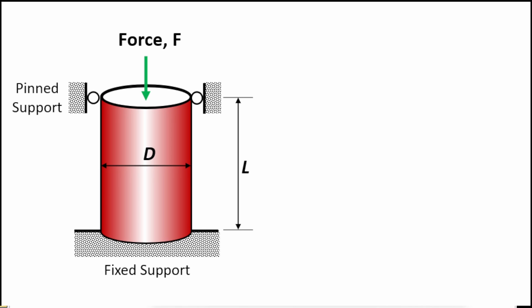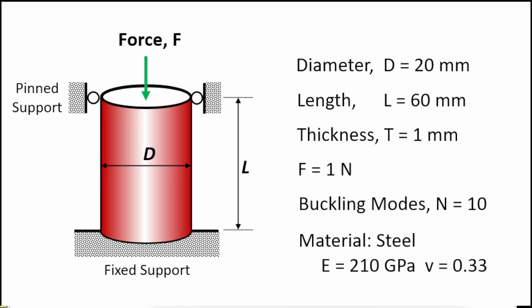This is a thin-wall cylindrical structure with a given diameter and defined height. It's fixed securely at the base and with a pin support at the top — a classic representation of a profile that will undergo buckling deformation. The diameter is 20 millimeters, the length is 60 millimeters, with a wall thickness of one millimeter and just a one-newton force at the top to activate the deformation.